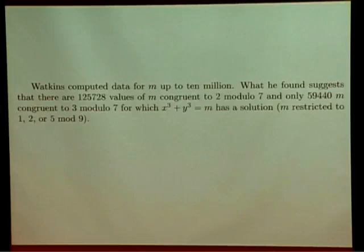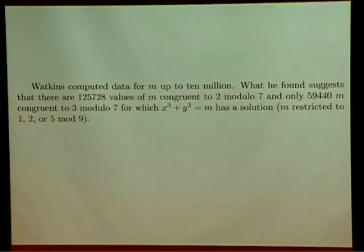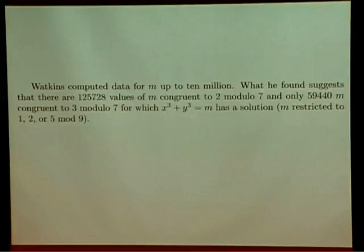If you separate the data — the m's in this rare situation — say mod 7, he found 125,000 values of m that are 2 mod 7, but only 59,000 m's that were 3 mod 7. You might expect that the m's would be evenly distributed mod 7, or mod any prime. And so the interesting thing is that you have this big discrepancy in how these rare sums of two rational cubes are distributed mod 7.